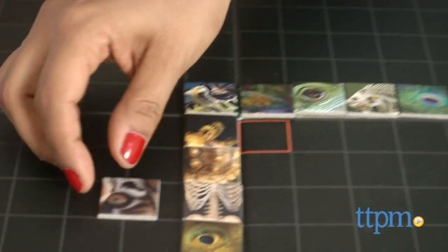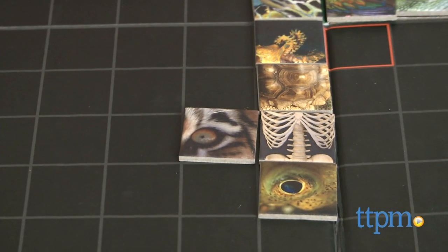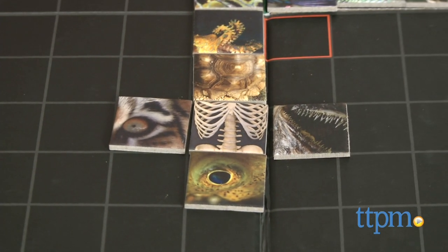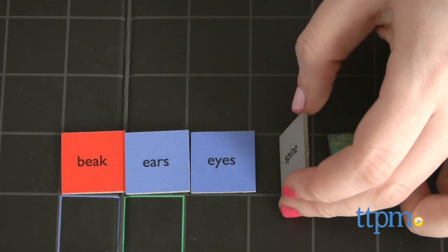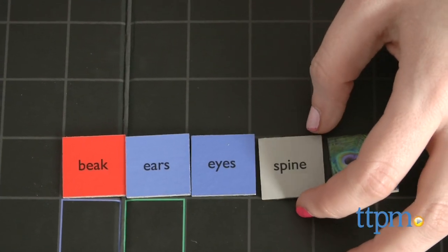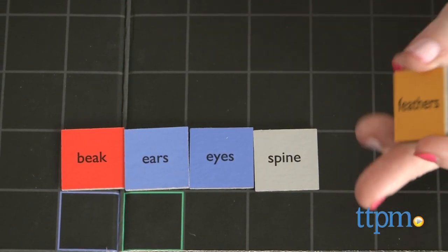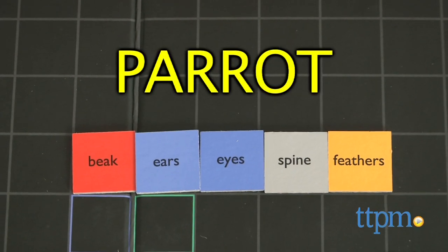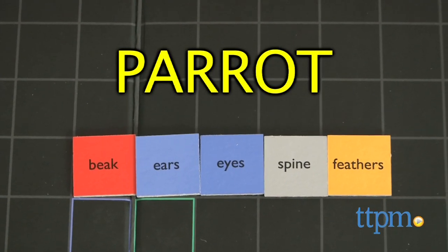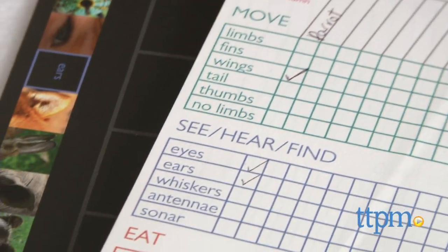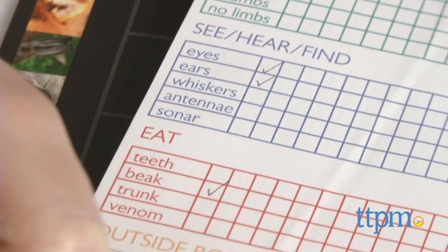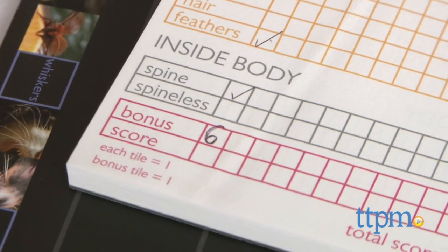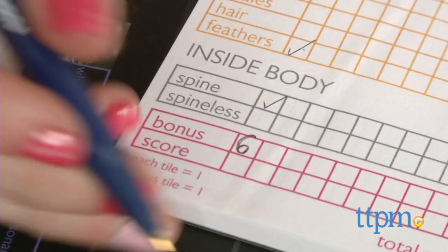To start playing, kids can create different animals either down or across on the game board by placing tiles to create their animals. For example, you can make a parrot with the tiles ears, beak, eyes, and spine. These tiles together can also correspond to a different animal — it also comes down to what kids want it to be. But the key here is that as they are playing, they are also learning about the anatomy that makes up different animals and their classifications.